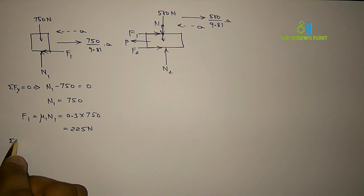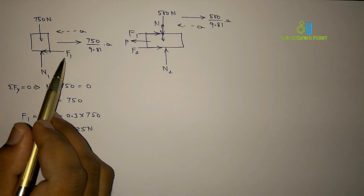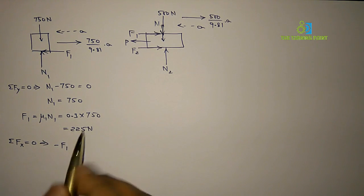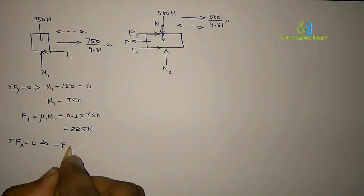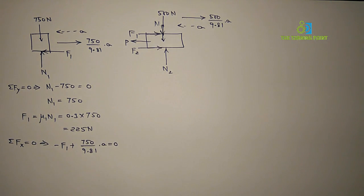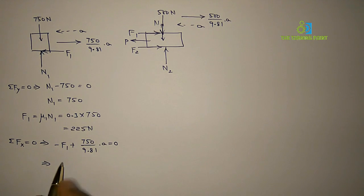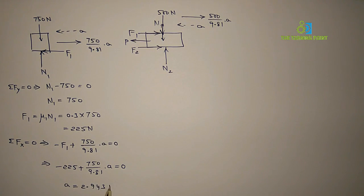Consider sigma Fx = 0 to find the acceleration. F1 acts along the negative x direction, so we have: −F1 + (750/9.81) × A = 0. Substituting F1 = 225N: −225 + (750/9.81) × A = 0. Simplifying, the acceleration A = 2.943 m/s².